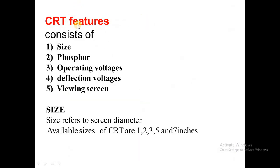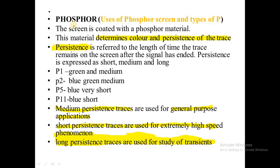The features of CRT include size, phosphor, operating voltage, deflection voltages, and viewing screen. The available screen sizes of CRT tube are 1, 2, 3, 5, and 7 inches — we prefer 5 to 7 inches. The screen is coated with phosphorous material, which determines the color and persistence. Persistence is referred to as the length of time the trace remains on the screen after the signal has ended. Persistence is expressed as short-term, medium-term, and long-term persistence.